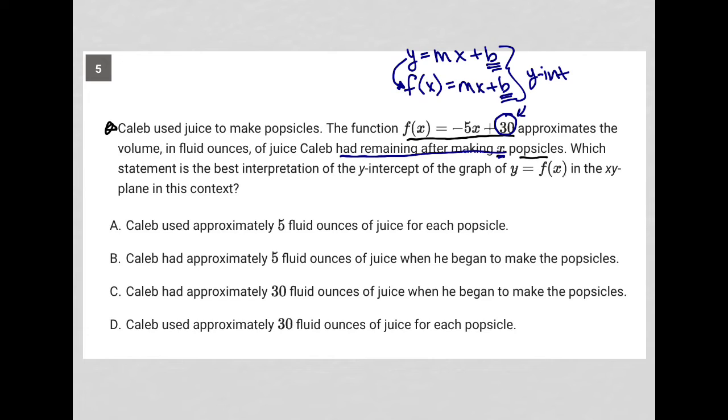So if, for instance, no popsicles have been made, that means x would be 0, which would make this whole term here, -5 times 0, this whole term would be 0, and I'd simply have f(x) = 30.